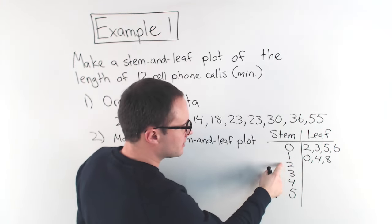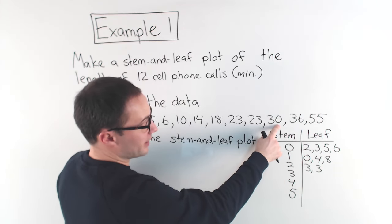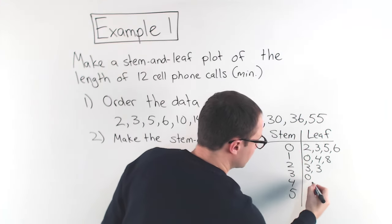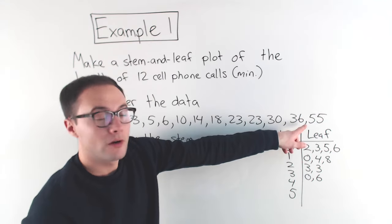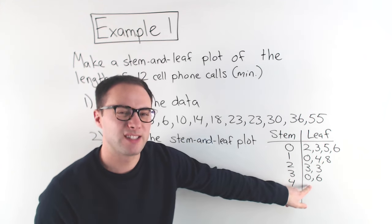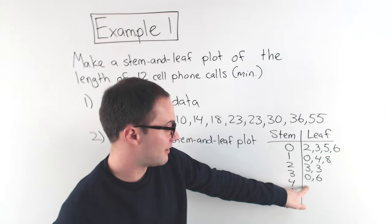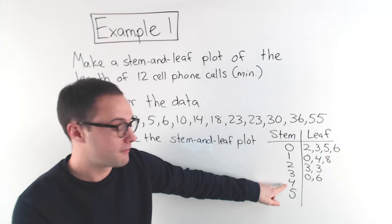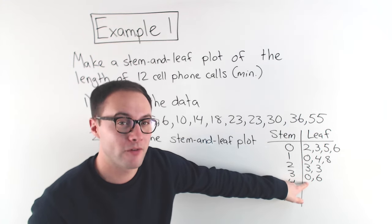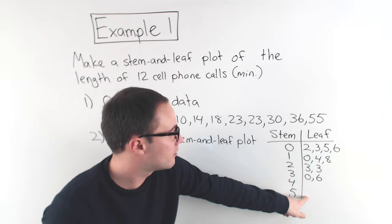Well, I've got two 23s, so that would be 3, 3. There is a 30, so I'm going to put a 0 there. That represents 30. I also have a 36, so I put a 6. Notice, there are no numbers in the 40s, okay? So, do I put a 0 there or leave it blank?